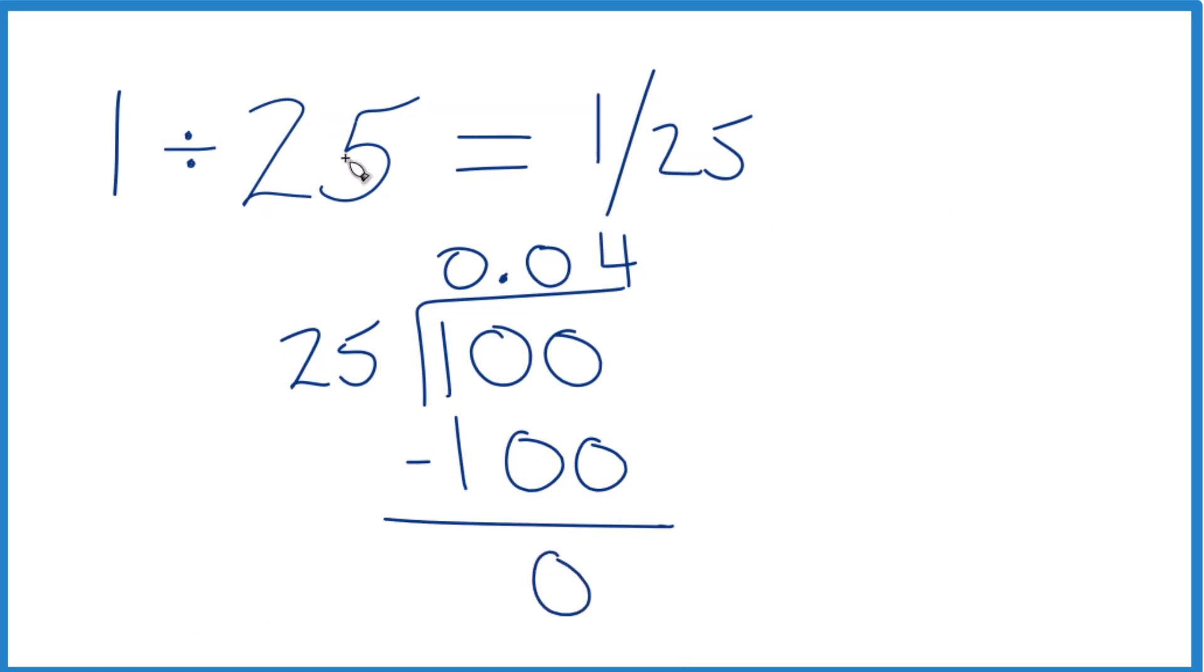So we could say that 1 divided by 25 equals 0.04 as a decimal. And if you multiplied 0.04 times 25, you'd get 1, so you know you did it correctly. That's it.